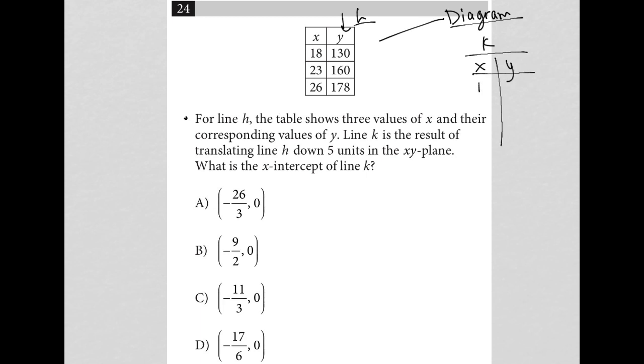For that same 18, instead of 130, it should be 125 because I've translated that value down five units. For 23, instead of 160, it'll be 155. And for 26, instead of 178, it'll be 173.